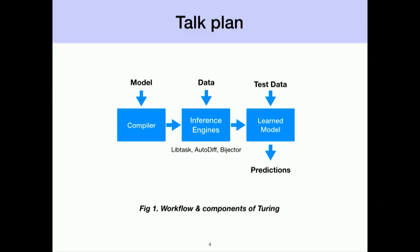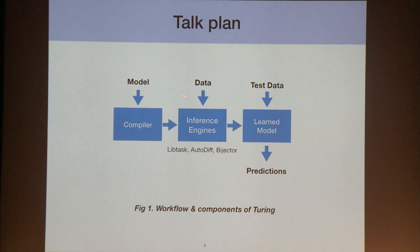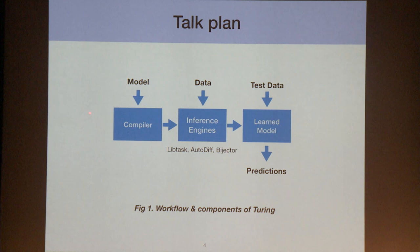This is the workflow of what users can do with Turing. You define some models and send them to Turing's runtime compiler. After that, you send data and the compiled model into Turing's inference engine. Then you have your learned model, which you can use to make predictions or other analyses. There are mainly three major components in Turing: the compiler, inference engines, and handling of inference results.